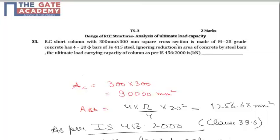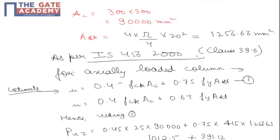Now this is a numerical response type question and as per the recommendation of IS 456-2000 clause 39.6, it says that PUZ is given by 0.45 FCK AC plus 0.75 FY AST, and this is the ultimate load carrying capacity of the column.